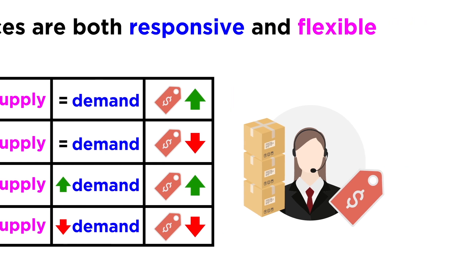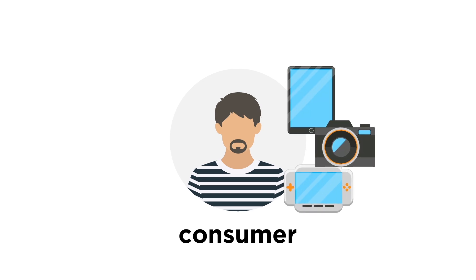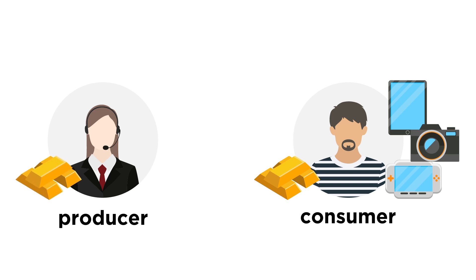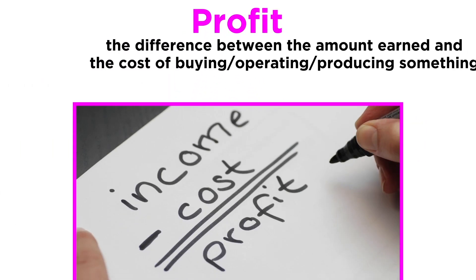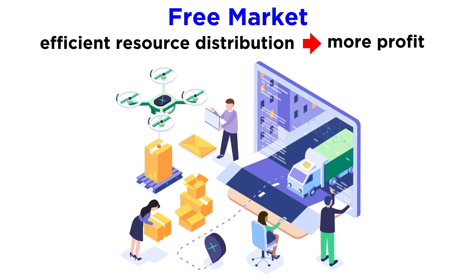Ultimately, remember that a consumer wants a high-quality good or service and more money in their pocket, and a producer or seller wants to make money from their good or service. In other words, they want a profit. A profit is a financial gain, particularly in reference to the difference between the amount earned and the cost of buying, operating, or producing something. In a free market, prices result in more profit because they distribute resources more efficiently.